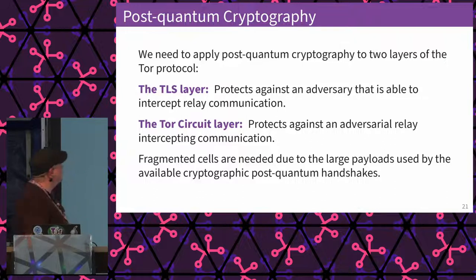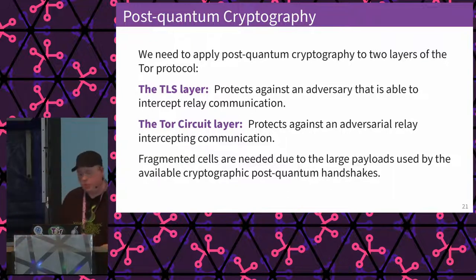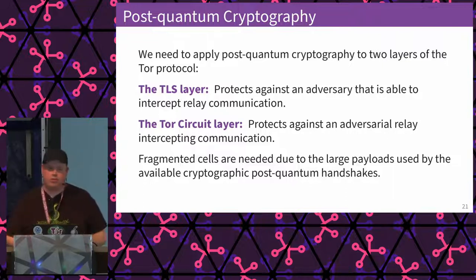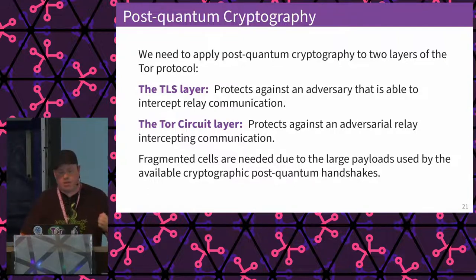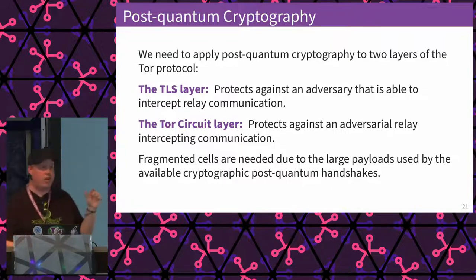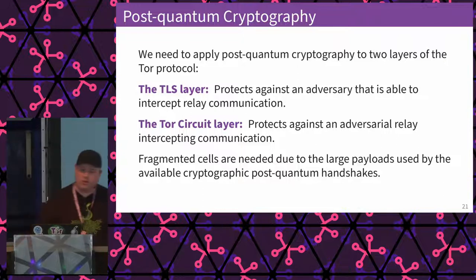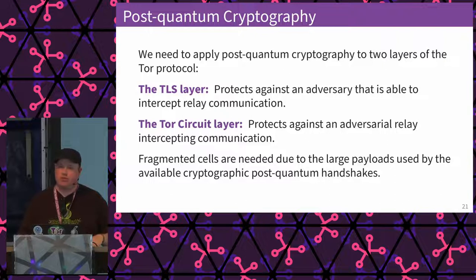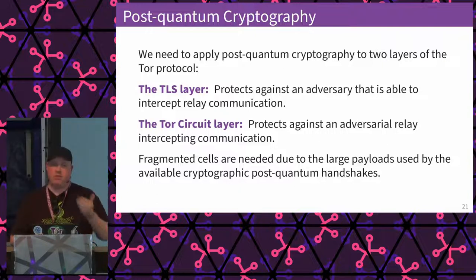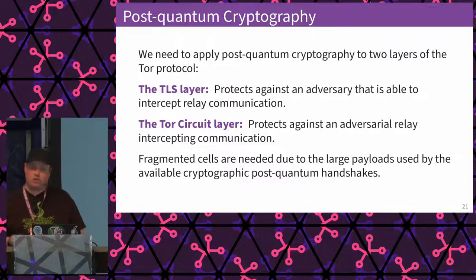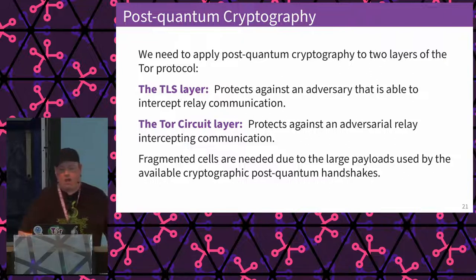The reason we need this is the NIST competition on post-quantum cryptography — I believe the winners were announced about two weeks ago. Historically we moved from RSA and classic Diffie-Hellman to elliptic curve cryptography when we entered the mobile world, getting significantly smaller handshakes. But now we're entering post-quantum cryptography reality, where the new handshakes have significantly large secret keys, public keys, and handshake material to transfer — larger in bytes than RSA. This is why we need the fragmented cells to carry this additional data.